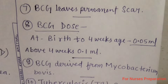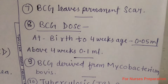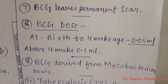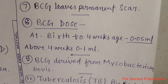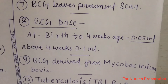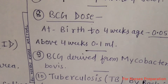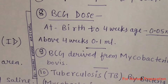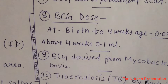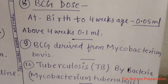Point number 8 — BCG doses: If the BCG vaccine is given at birth, the dose will be 0.05 ml. If the BCG vaccine is given after 4 weeks, the dose will be 0.1 ml.